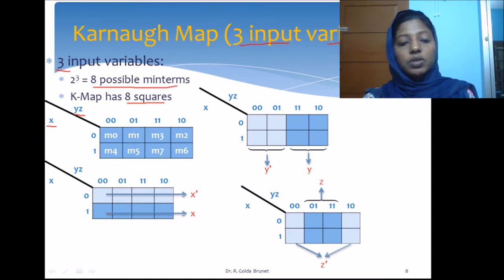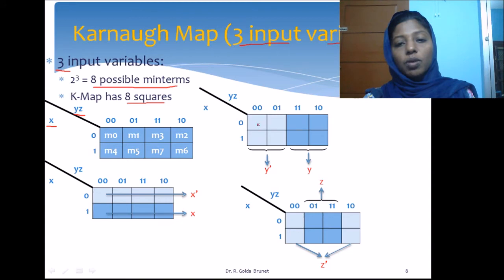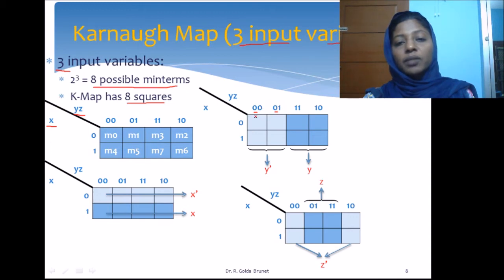When x is 0 across all 4 cells, we get X-bar as the product term. When we group all 4 cells in the other row together, we get the product term X. If we group a different set of 4 cells together across both rows, x is varying so x is omitted. Y remains constant at 0 in that case, so the product term will be Y-bar.